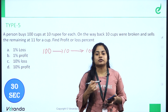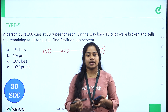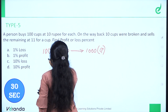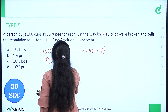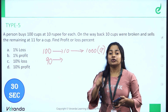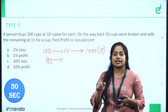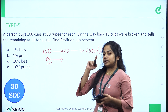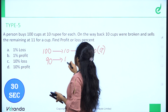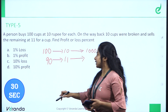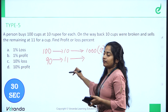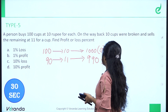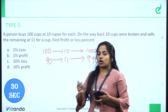On the way back, 10 cups were broken. So the remaining cups are 90. He sells the remaining 90 cups at 11 rupees each. So the selling price is 90 into 11.